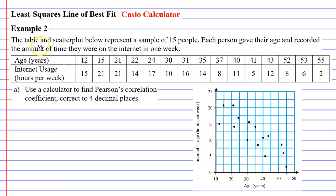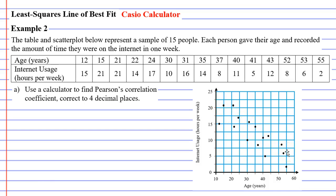Here we have example two. The table and scatterplot below represent a sample of 15 people. Each person gave their age and recorded the amount of time they were on the internet in one week. A 12-year-old used the internet for 15 hours in the week, whereas someone who is 55 years old used only two hours. When we look at the scatterplot, we can see that as people get older, they seem to be on the internet less.